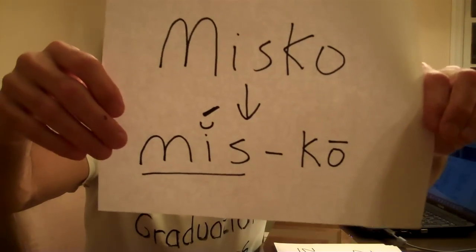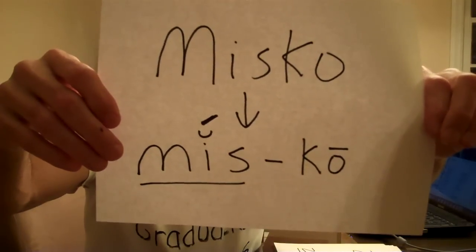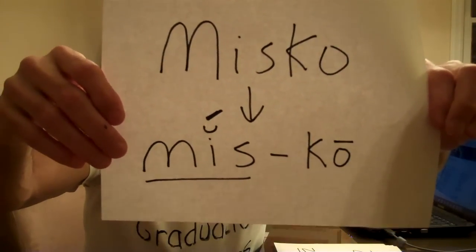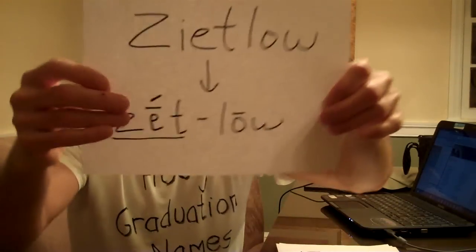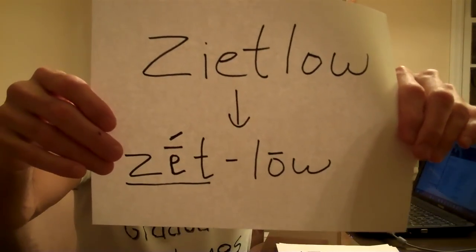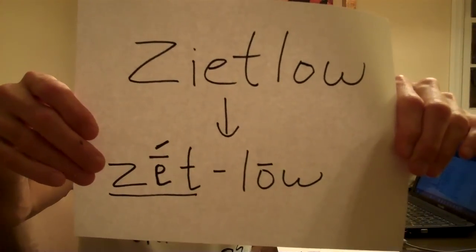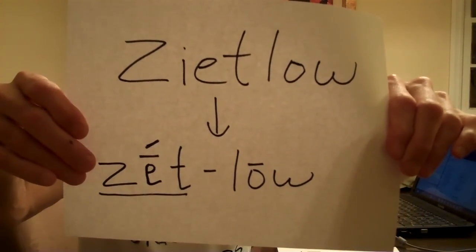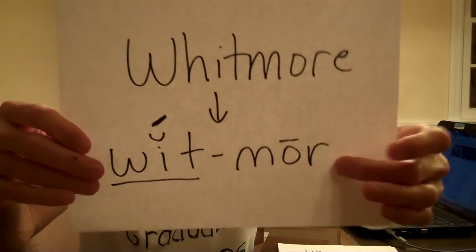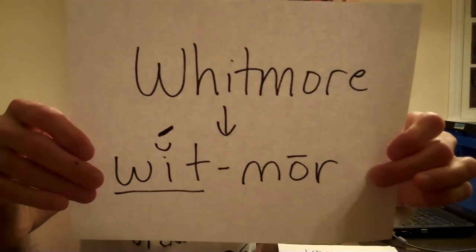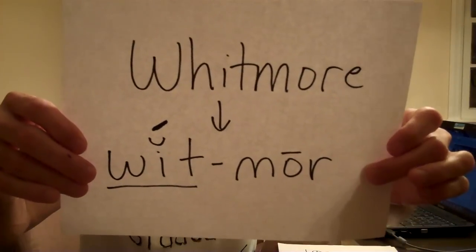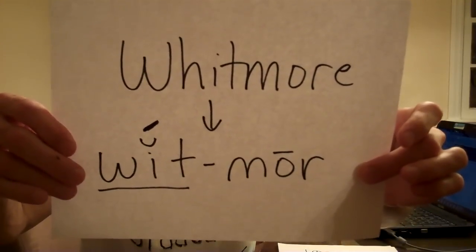Let's go through these a little more quickly. 'Misko' — I separated the syllables: soft I at the beginning, hard O at the end — 'Misko.' 'Zitlo' — I took the hard E, Z-E, and then the hard O, 'low,' separated the syllables, underlined and accented the stressed syllable. My own name — you don't pronounce my H, so I didn't put it in there. You don't pronounce the E, I didn't put it in there. Soft I, hard O, then OO — and I separated the syllables.